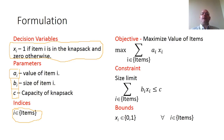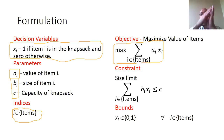Our objective is to maximize the value of items that are in the knapsack, and the way we compute this is we sum a sub i times x sub i. Since x sub i is 1 if the item is in the knapsack and 0 otherwise, when you sum a sub i times x sub i, you get just the values of the items that are in the knapsack, because a sub i times 1 is a sub i, and a sub i times 0 is 0.